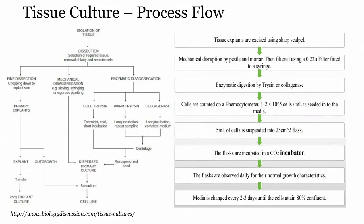The tissue culture process flow: tissue explants are excised using a sharp scalpel and then mechanically disrupted by pestle or mortar, filtered using a 0.22 micron filter using a syringe, followed by enzymatic digestion by trypsin or collagenase. Cells are counted on a hemocytometer, then 5 ml of cell suspension is placed in a 25 cm² flask. The flask is incubated in the CO2 incubator, observed daily for normal growth, and media is changed every 2 to 3 days until the cell reaches 80% confluency.